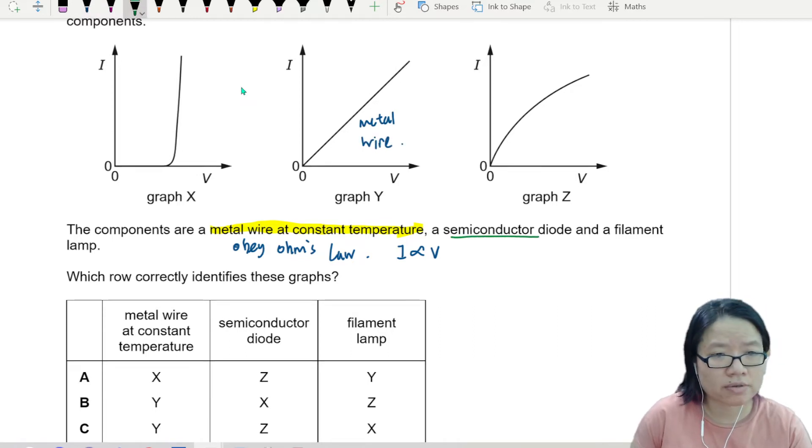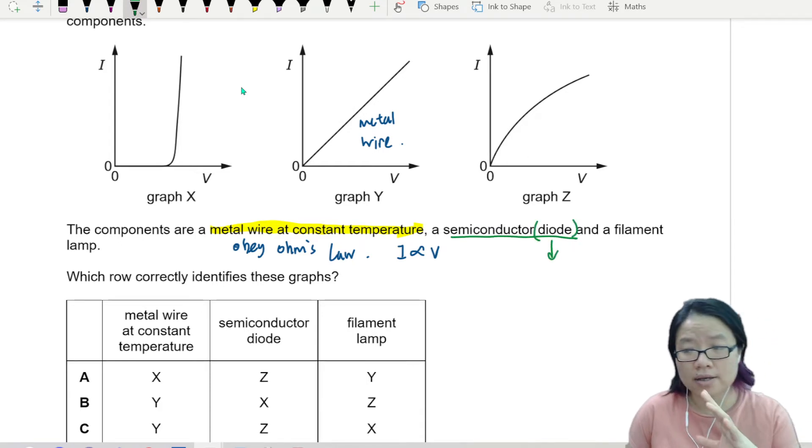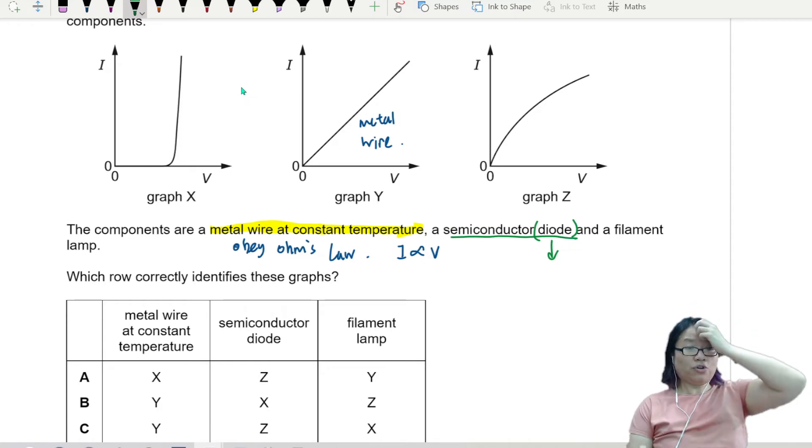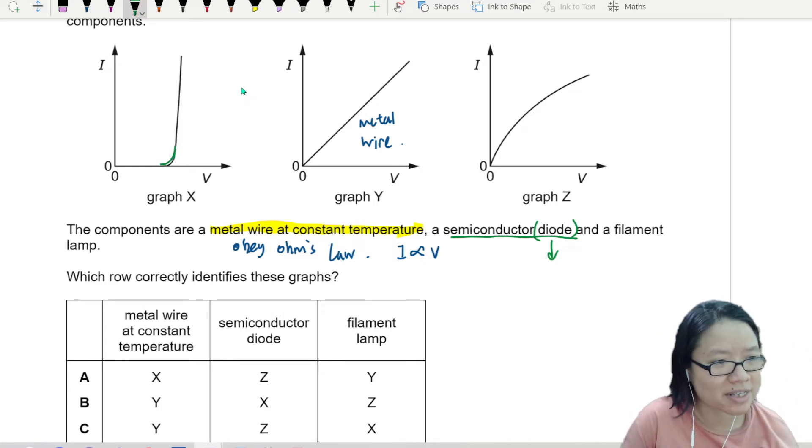Semiconductor diode. Whenever there is a diode, there is always, in the actual terms in electronics, we call it the knee voltage because you see this part looks like a knee, right?